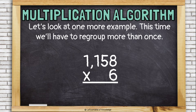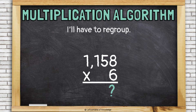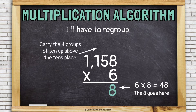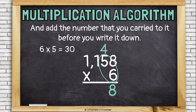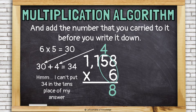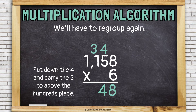But of course, we have to try one with four digits. So this time, we're multiplying 1,158 times 6. As always, let's start with the ones. 6 times 8 is 48. But I know that I'm going to have to regroup here. I cannot put a 48 in the ones place of my answer. So I put down the 8 and I carry the 4 into the tens place, because that's what it is — it's four groups of 10. Now I'm going to multiply by the tens place. 6 times 5 is 30. But I know I have to add the 4 to it before I can write it down. So I have 30 plus 4, which equals 34. I can't put a 34 in the tens place of my answer. I'm going to have to regroup again. So once again, I'll put the 4 down and I'll carry the 3 to above the hundreds place.